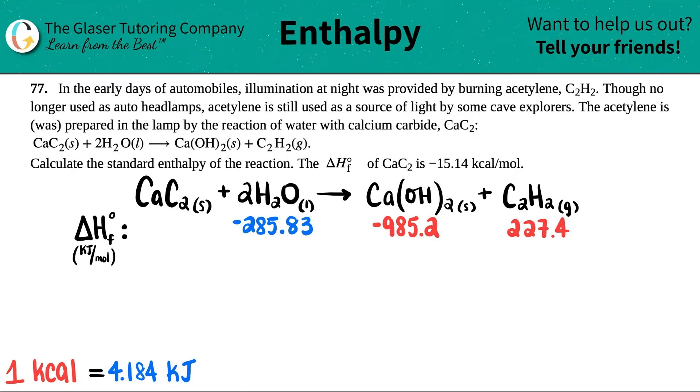Number 77. In the early days of automobiles, illumination at night was provided by burning acetylene, which is C2H2.